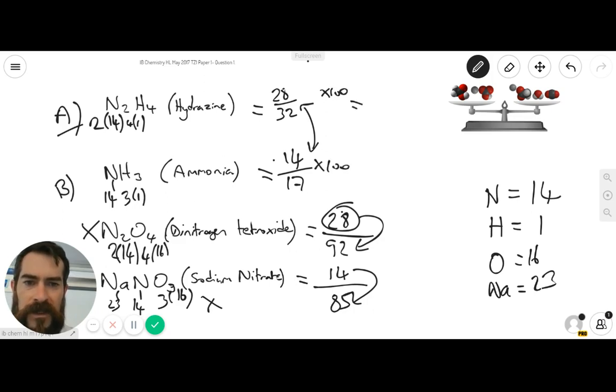If we do that, we get 2,800 on the top here divided by 32. And on this one, in the answer B here, we have 14 multiplied by 100 over 17.